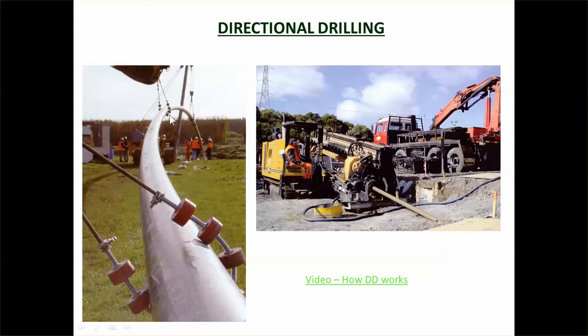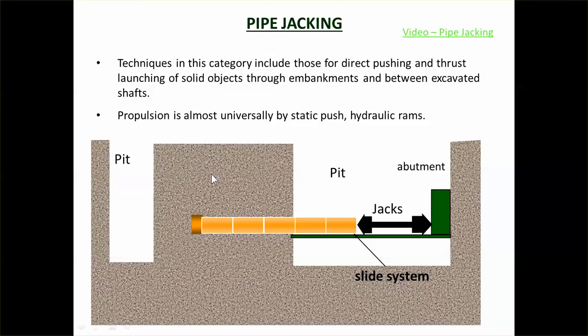The type of pipe usually used for directional drilling is polyethylene pipe, because it's flexible and its welded joints are very strong. If you tried to use rubber ring joints, they would pull apart when dragged through the hole. Polyethylene pipe is strong in tension, can be pulled through the hole, is flexible, and can also be threaded.